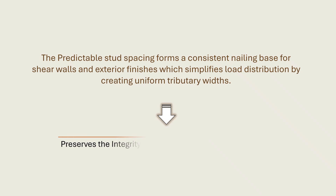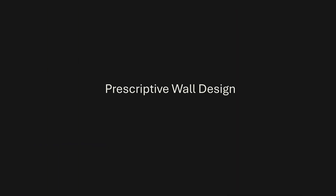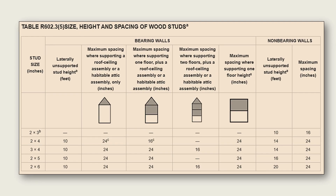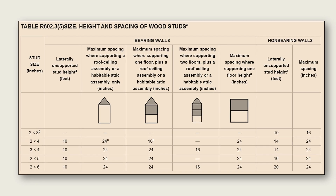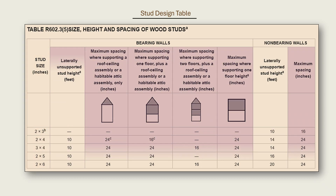This helps preserve the integrity of the prescriptive design process, which relies heavily on standardized spacing patterns. The prescriptive design of wall studs in the International Residential Code is based on the fifth table in section R602.3, which we are going to call the stud design table. This table codifies the allowable combinations of stud size, stud height, and spacing for a variety of common framing scenarios. It gives designers and builders a ready-made framework for code-compliant framing prescriptions for walls that carry standard loads under ordinary conditions.